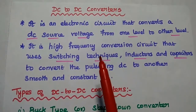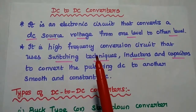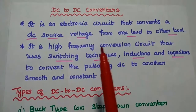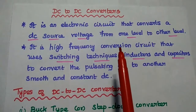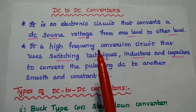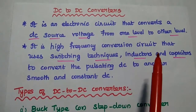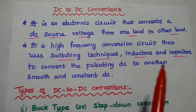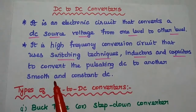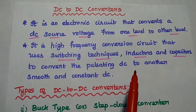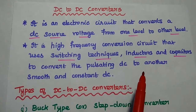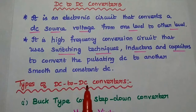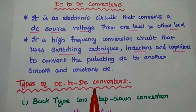Dear students, now we are going to discuss DC to DC converters and their types in detail. It is an electronic circuit which converts a DC input voltage from one level to another level. It uses switching techniques, inductors and capacitors in its circuit to convert the pulsating DC voltage to another level which is smooth and constant. It is widely used in switched mode power supply.